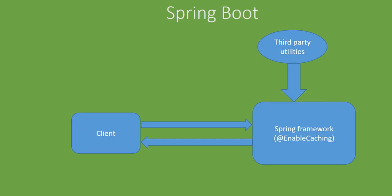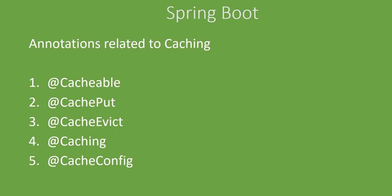There are some annotations related to caching that we need to learn. @EnableCaching is the first one — this annotation is used to convey to the framework that we are using cache abstraction for this project.